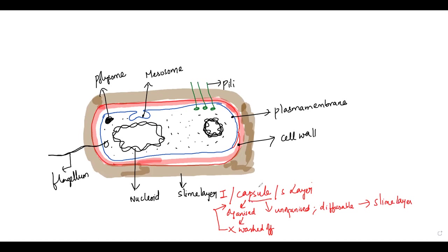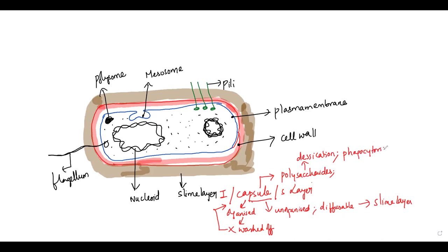But what is the capsule made up of? Capsule is made up of components like polysaccharides, which are complex carbohydrates. These polysaccharides will help the bacteria in protecting itself from desiccation and will even protect the bacterial cell from phagocytosis by any of the host cells, so they are basically providing protection.